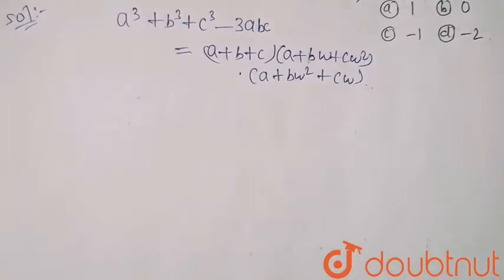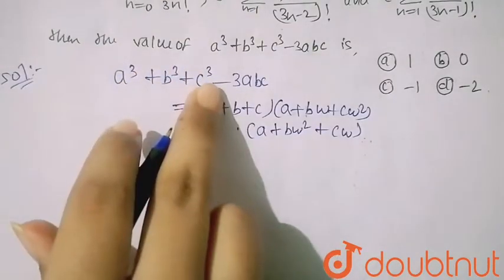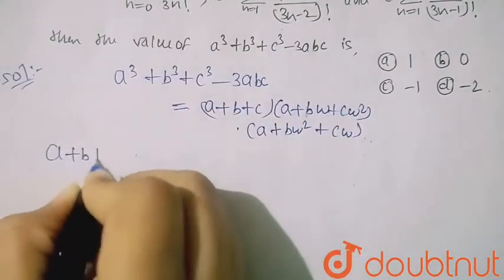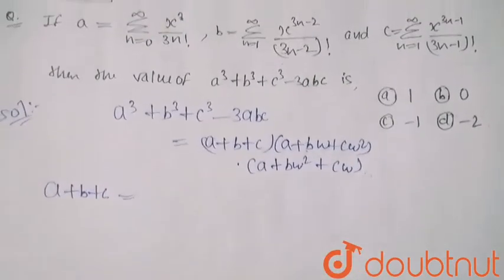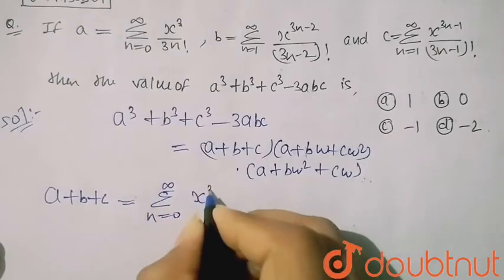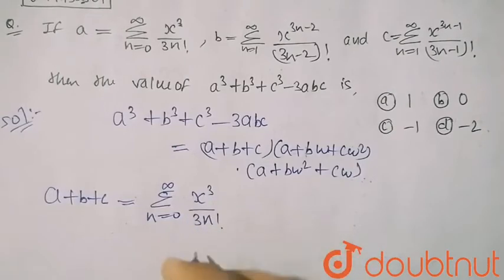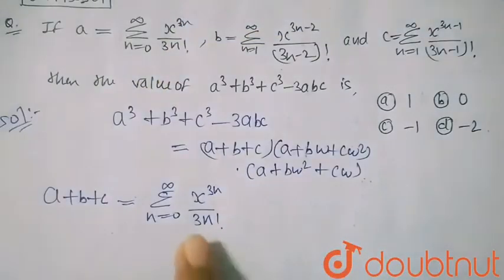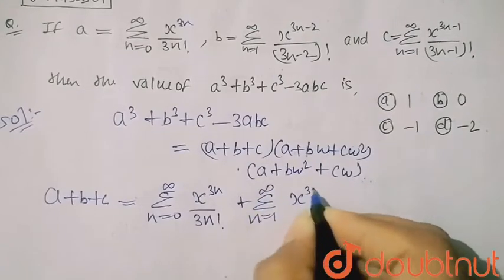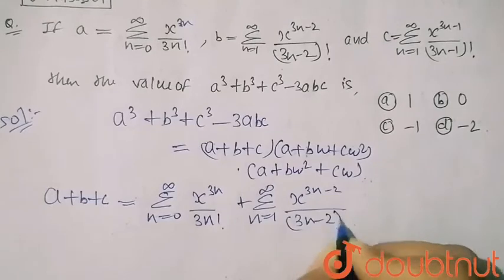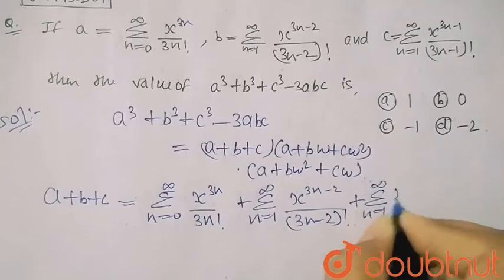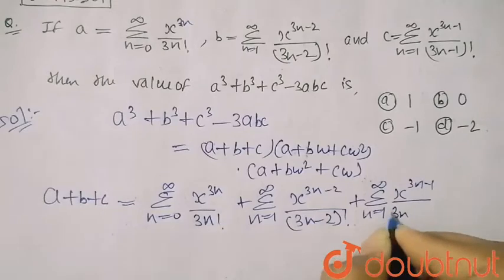To find this value, we need all individual values. First we find a+b+c. It equals summation n=0 to infinity of x^(3n) / (3n)! plus summation n=1 to infinity of x^(3n-2) / (3n-2)! plus summation n=1 to infinity of x^(3n-1) / (3n-1)!. I have just put in the values and added them.